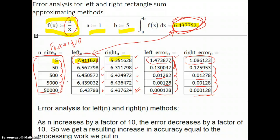So the final analysis, as n increases by a factor of 10, the error decreases by a factor of 10. So in other words, we get a resulting increase in accuracy equal to the processing work we put in.